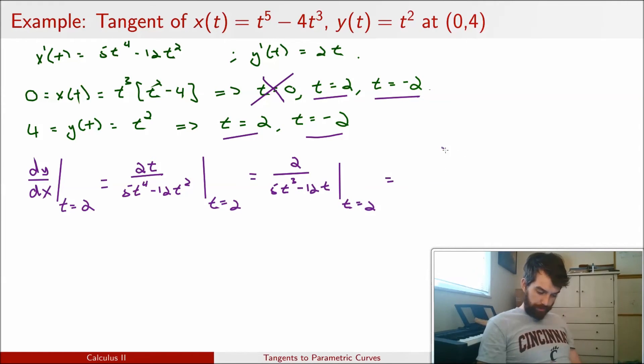And therefore, 2 divided by 8 times 5 is 40 minus 24, which is 2 divided by 16, which is equal to 1/8.